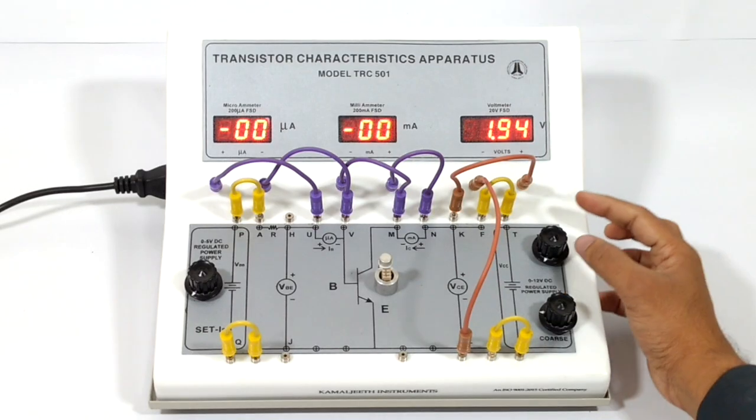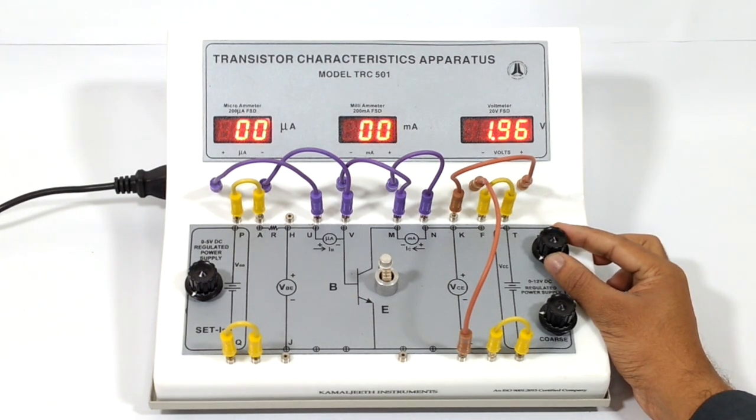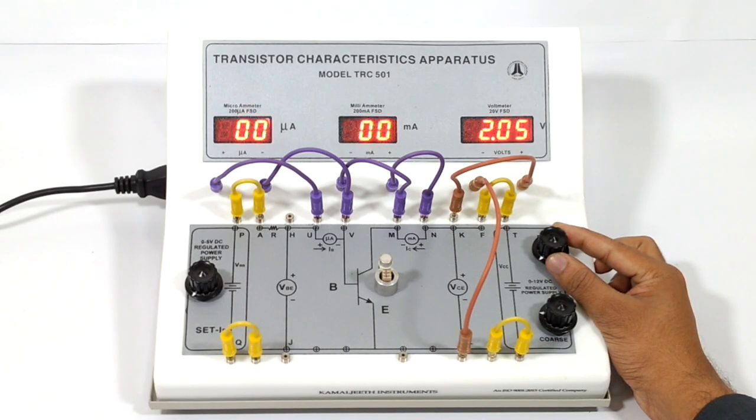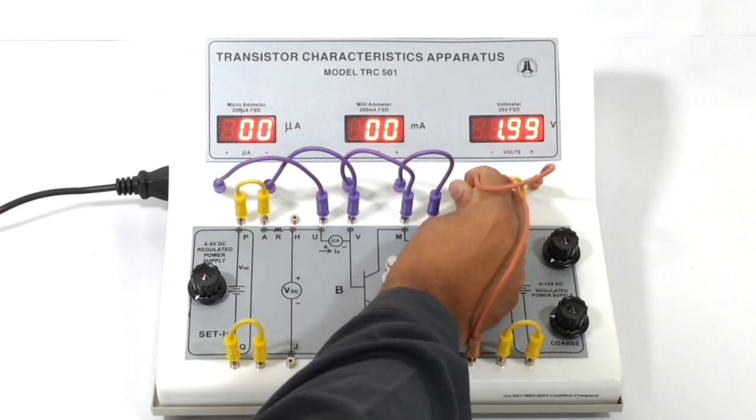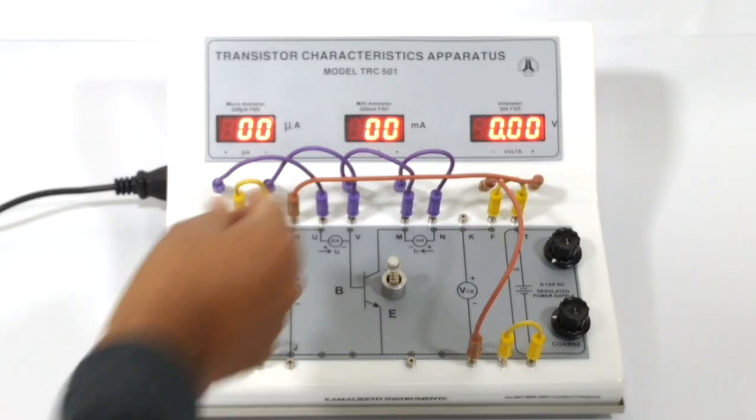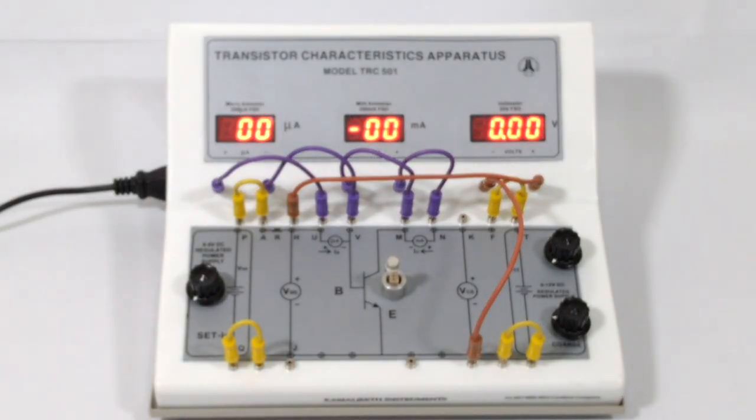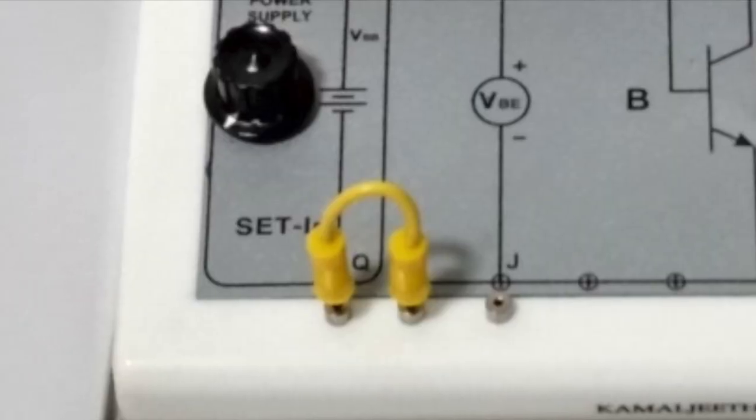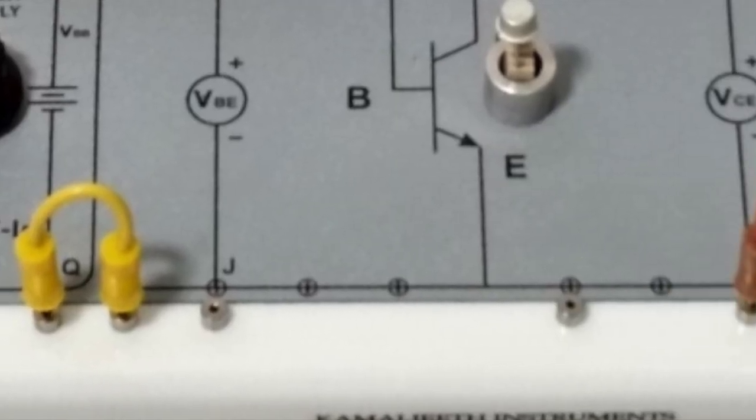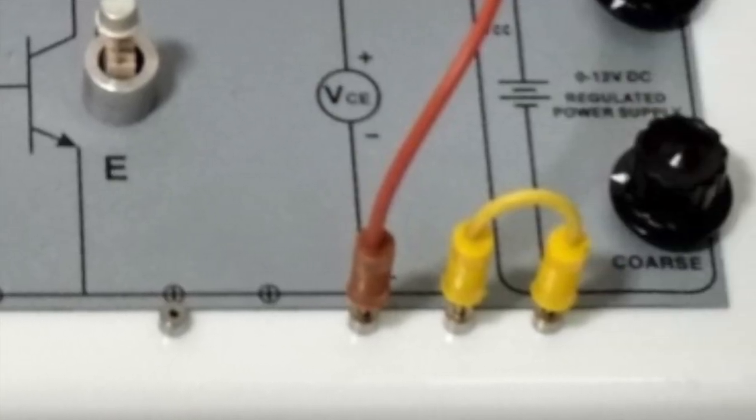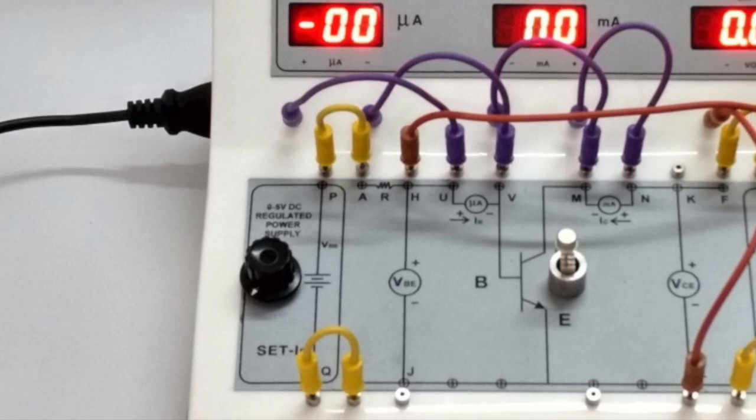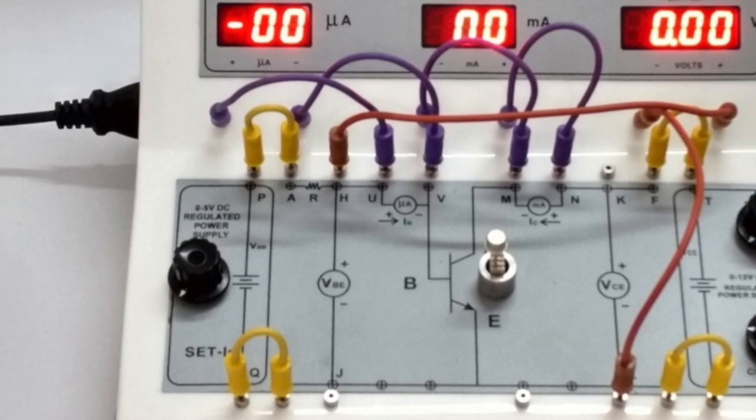Now the voltmeter measures VCE. Adjust VCE to 2 volts by turning these knobs, note down VCE equal to 2 volts. Number six, the positive lead connecting the voltmeter to the circuit in the output side is disconnected at the circuit end and then connect the same lead to the positive point in the input side. Since all the lower terminals are interconnected in the negative side, no need to change the negative terminal connections. The voltmeter measures VBE. These are the input characteristic connections.